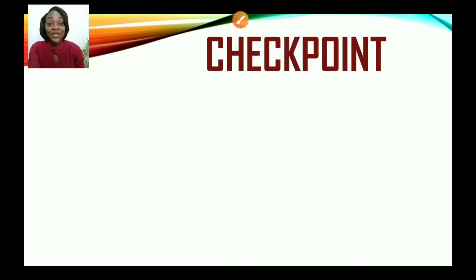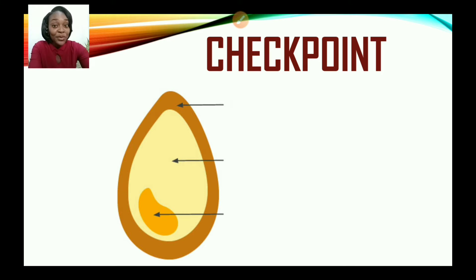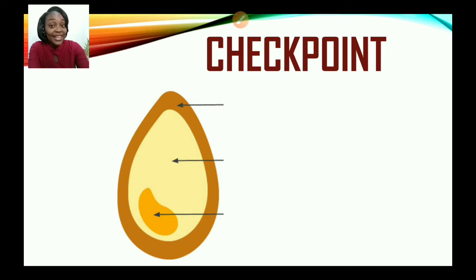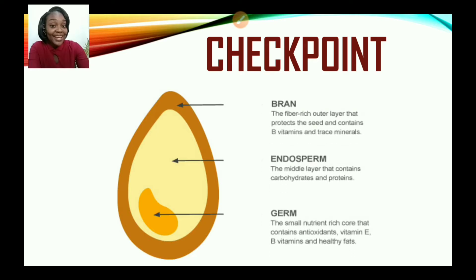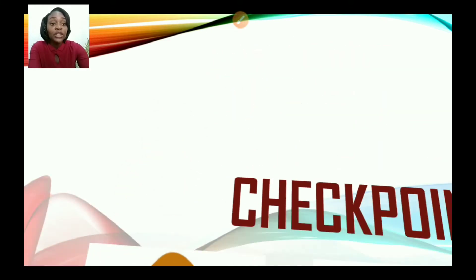Now that you have observed the diagram of the cereal grain, let us see if you could label one for yourself. We have three parts: a brown outer layer, an inner layer, and a most-inner part. Can you identify these parts? The bran is the brown outer layer, the endosperm is the middle, and the germ is the innermost part.